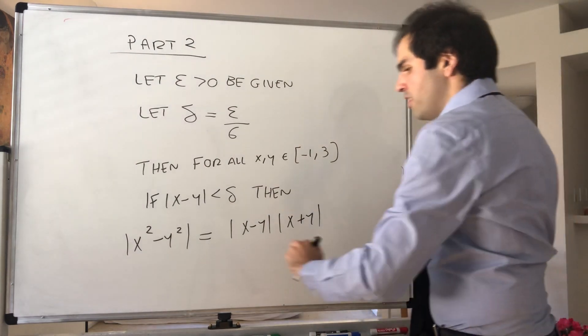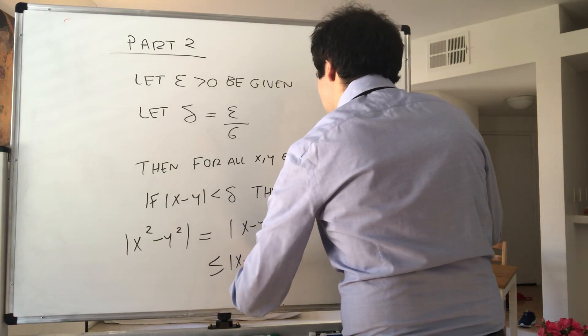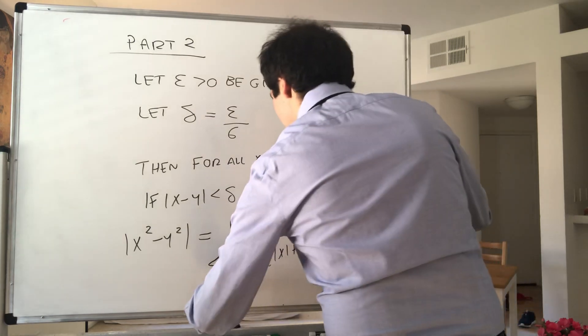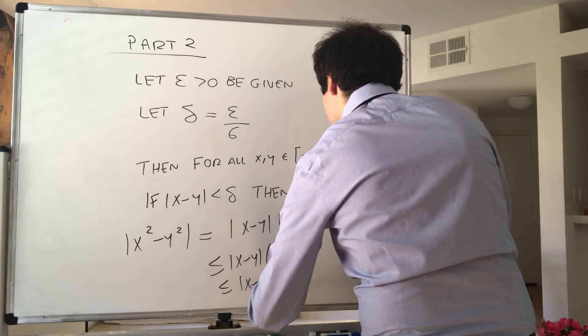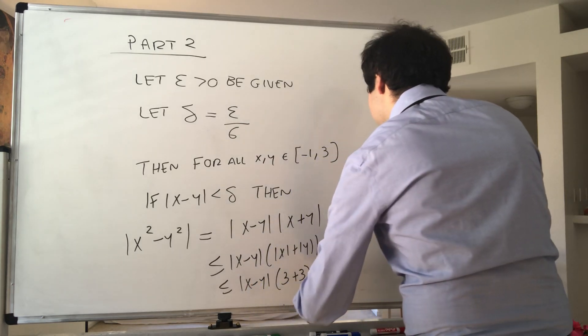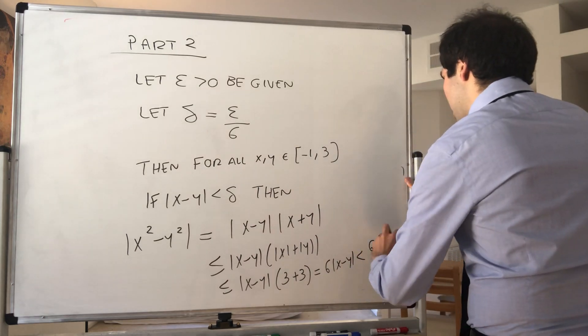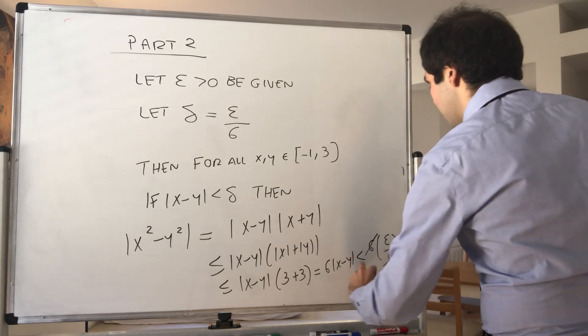And then we found this to be ≤ |x - y|(|x| + |y|), which is ≤ |x - y|(3 + 3), which is 6|x - y|. And that's less than 6(ε/6), because this is our δ. And then we're left with ε.